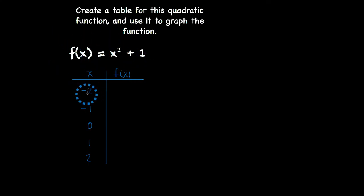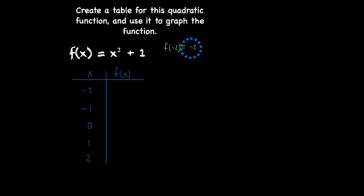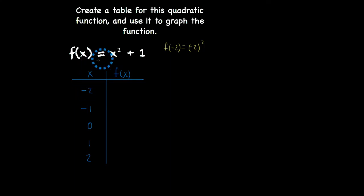So I have x is negative 2. f of negative 2 — I'm going to write that down. Basically, what I'm doing is substituting negative 2 in for x. So f of negative 2 means I have negative 2 squared. Notice I place parentheses around negative 2 because I'm substituting negative 2 in for x. It's really important when you're raising a negative value to a power.